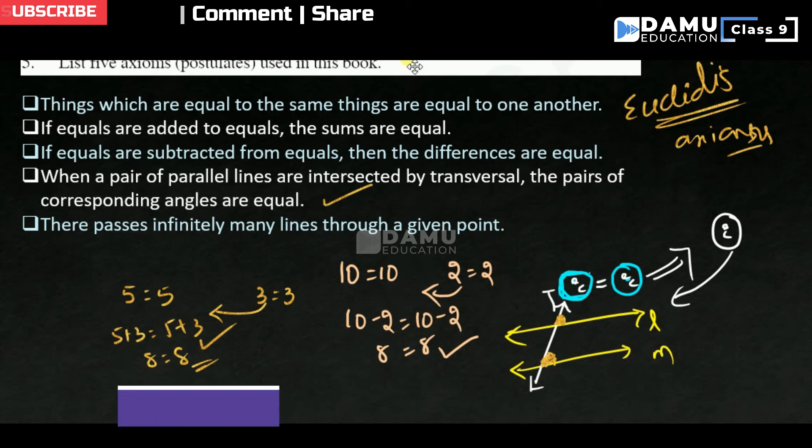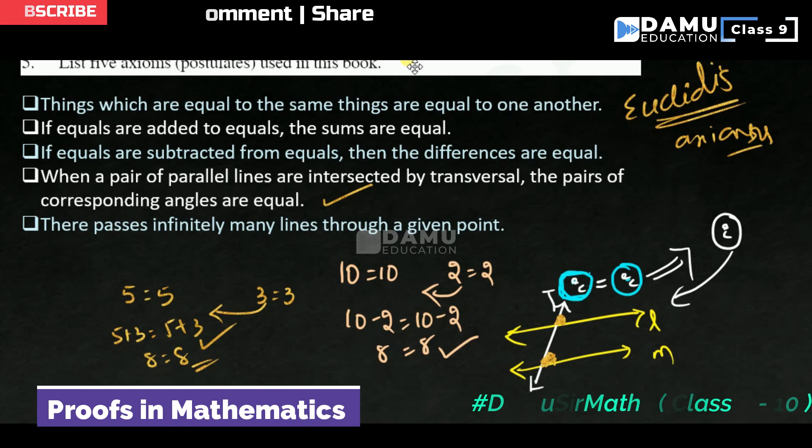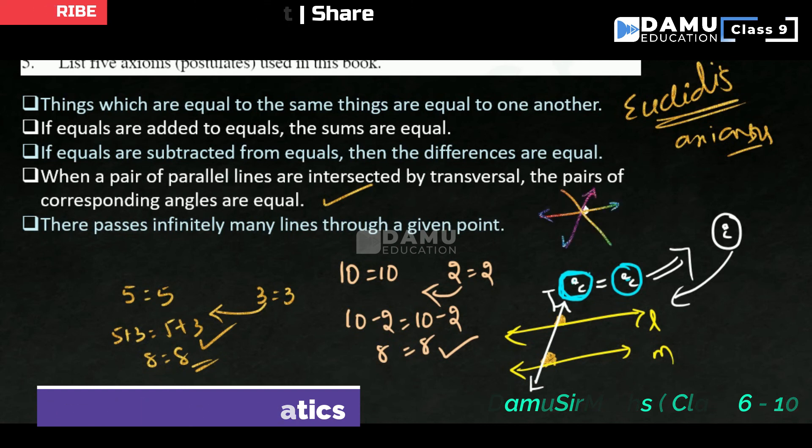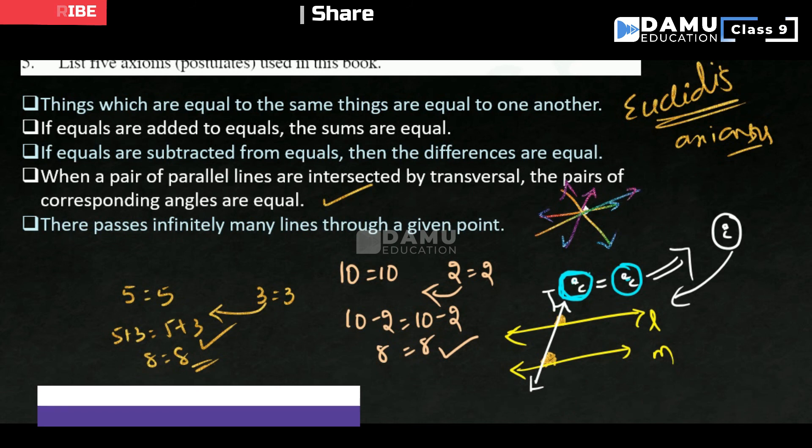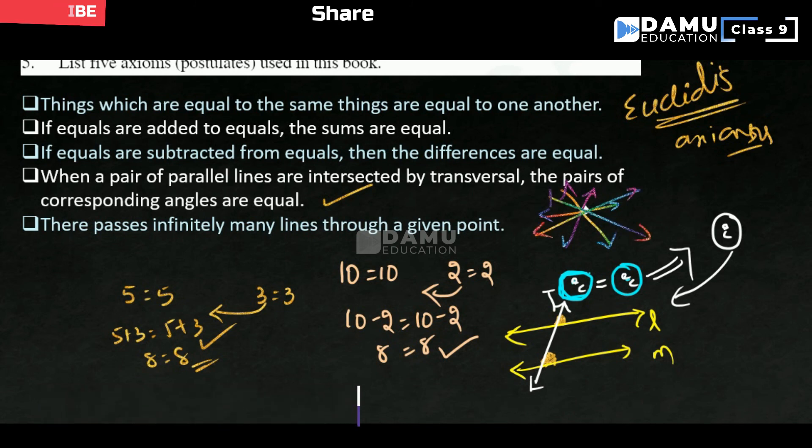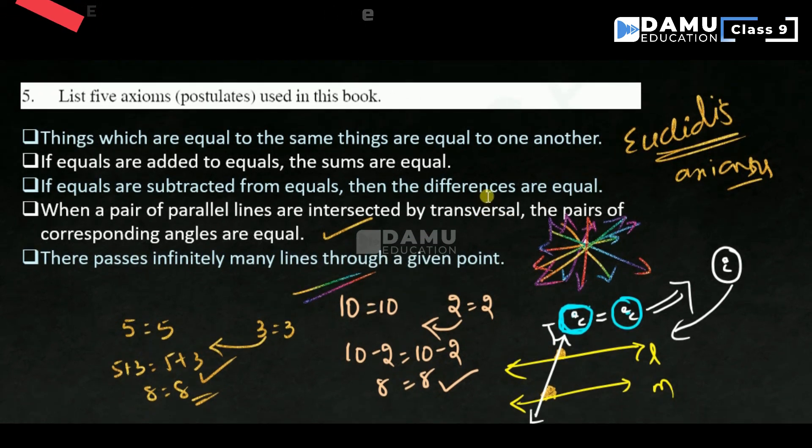Next one: There pass infinitely many lines through a given point. Let us take one point here. From this point, so many lines will pass like this. How many lines will it be? Infinite lines will pass. We cannot count how many lines can pass. Infinite lines will pass through one single point.